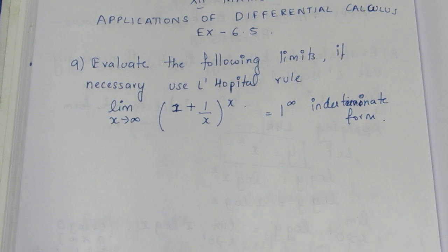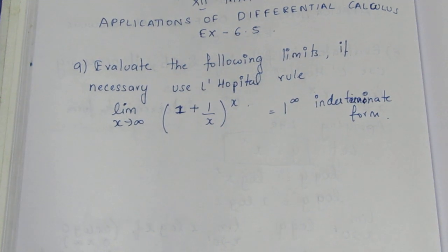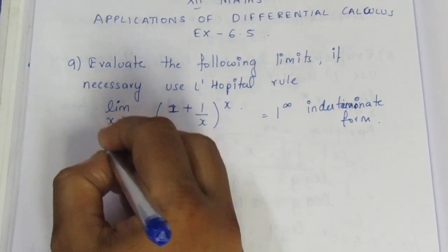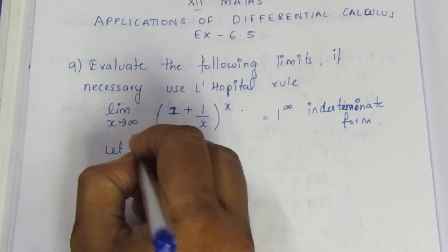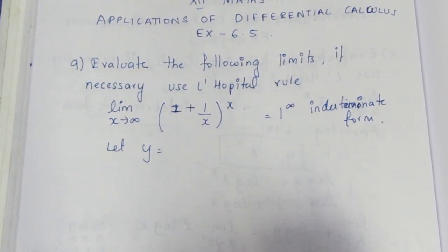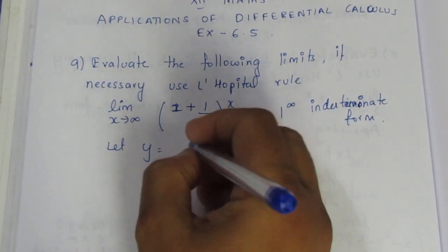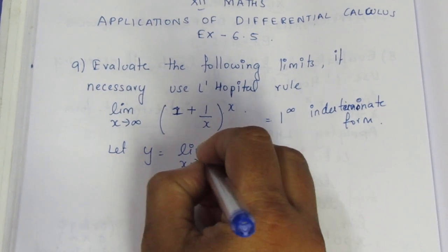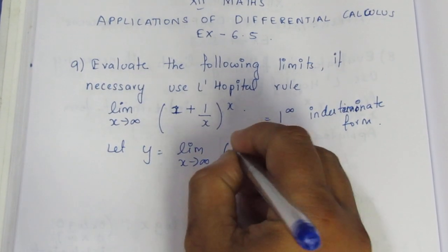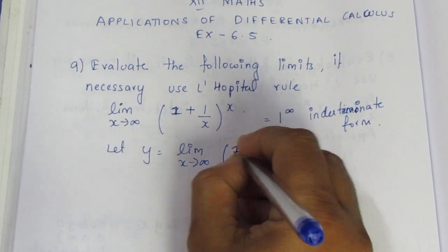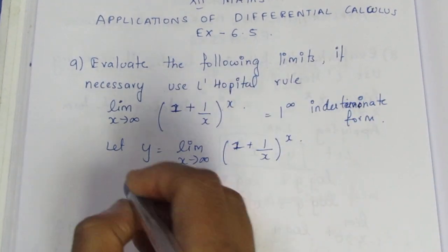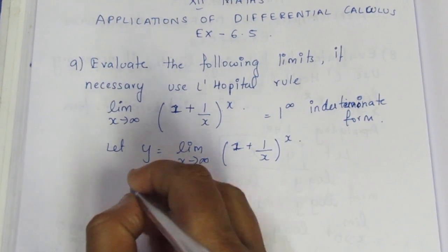So what should we do? If we apply the limit value and it is indeterminate, we follow the L'Hôpital rule. Let y be equal to the expression. If we have a power, we will take log. Limit x tends to infinity of 1 plus 1 by x, all raised to the power x.